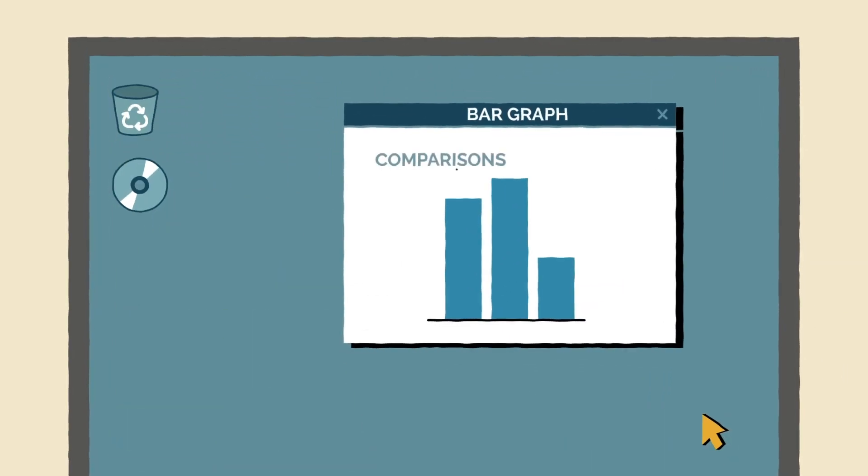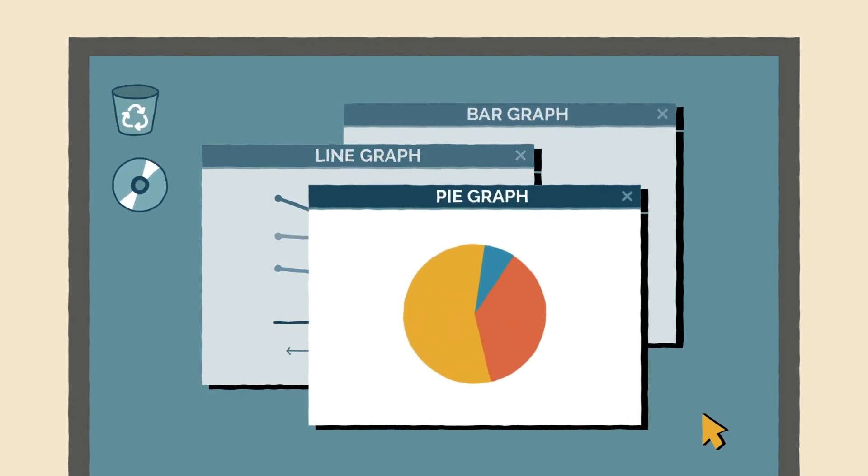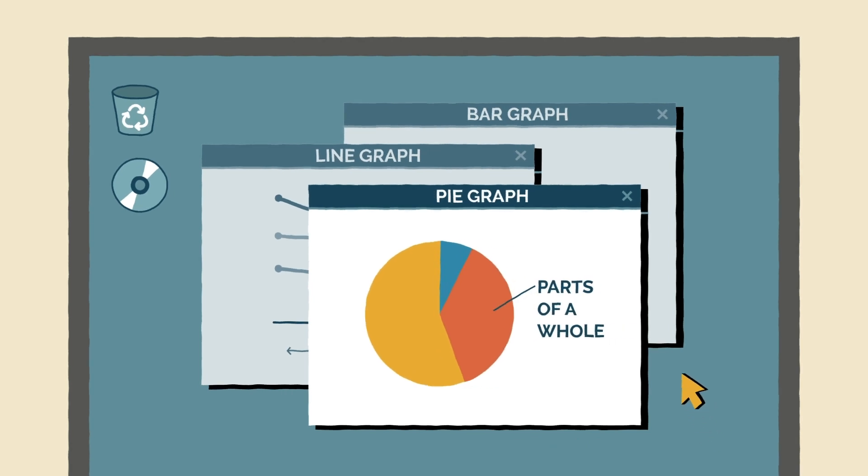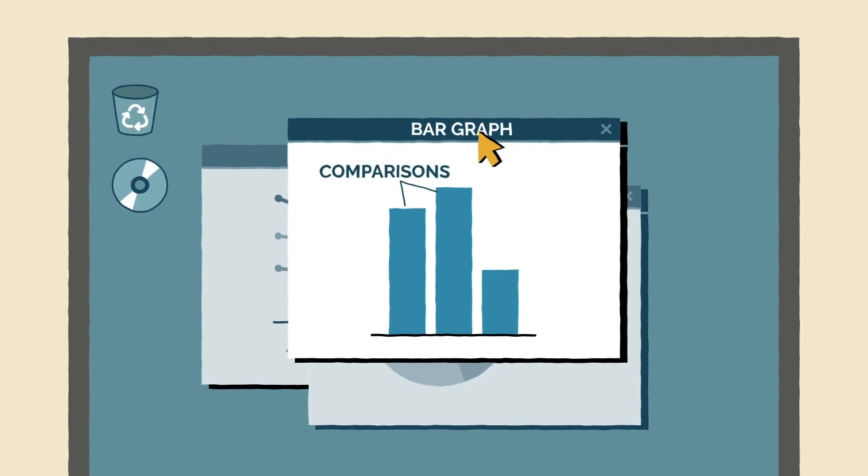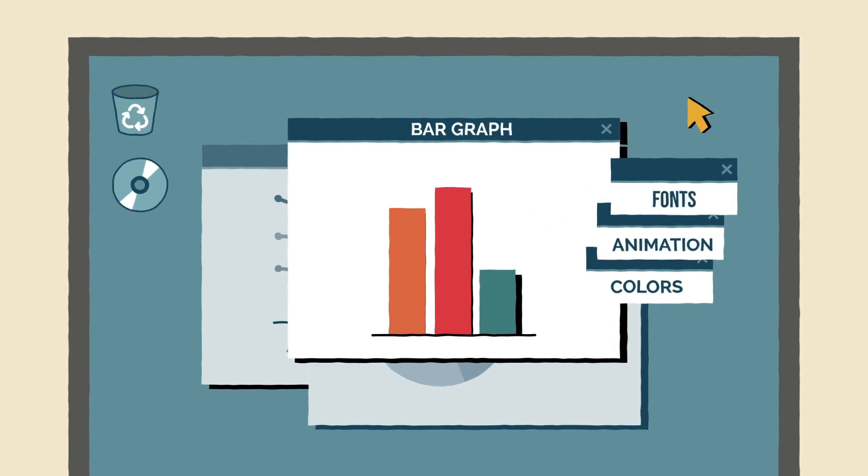Bar graphs are better with comparisons. Line graphs are better at showing data over time. And pie graphs are best for showing parts of a whole. Marty can even use colors, animations, and even different fonts and styles to emphasize or de-emphasize information.